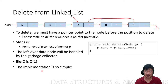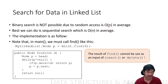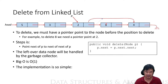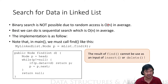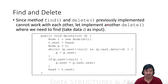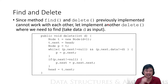The problem is: if you find it, you're pointing to that node. If you want to insert next to it that's fine, but if you want to delete that node it's not possible — you need a pointer to the node before it. You cannot go back because we have only one-way pointers. So you can't implement delete using this search directly; instead you search for the node whose next equals your data.